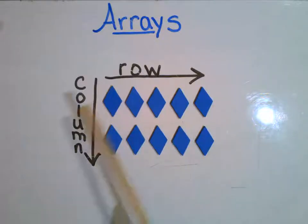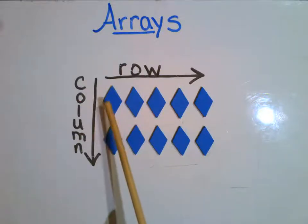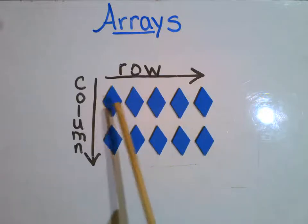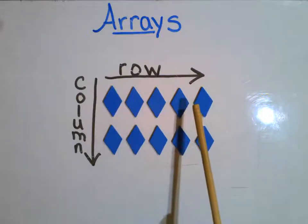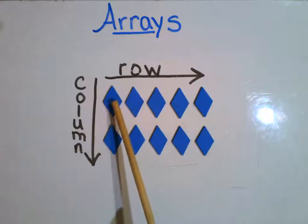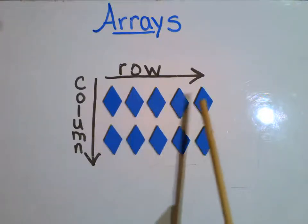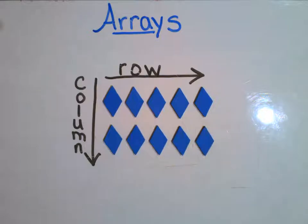So when we look at an array here and I have an arrangement, it's a group of objects that is arranged in an order where you have the same amount in each row, which as you can see my rows go across or horizontally, as they have the same amount in their columns, which the columns go up and down or vertically.